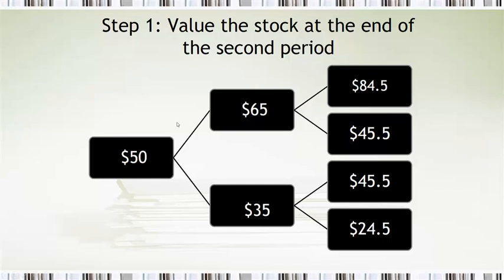When we value the stock, moving upward, up, up, up, down, down, up, and down, down, these are the different values that we get in the second period of the price.